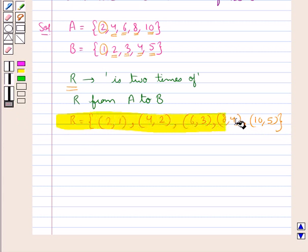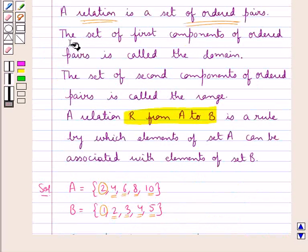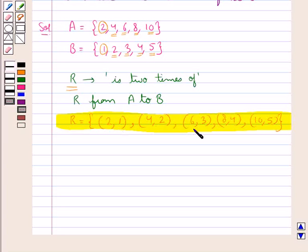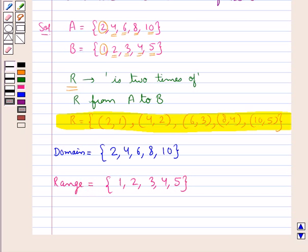Thus we have the relation R defined in this way and we have formed the relation R from A to B. Next we are supposed to find the domain and range of R. The set of first components of the ordered pairs is the domain, which is {2, 4, 6, 8, 10}, and the set of second components of the ordered pairs is the range, which is {1, 2, 3, 4, 5}.